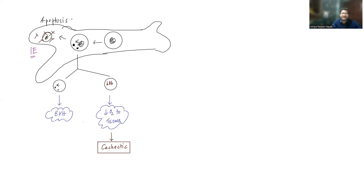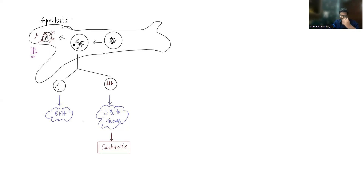The bone marrow recognizes these erythroblasts as abnormal and destroys them as a protective mechanism through apoptosis. This phenomenon of RBC precursor destruction inside the bone marrow is known as ineffective erythropoiesis. If the same process — RBC destruction — happens outside the bone marrow, it is known as hemolysis. Ineffective erythropoiesis is the major mechanism in the pathogenesis of thalassemia.